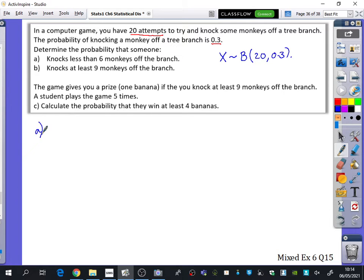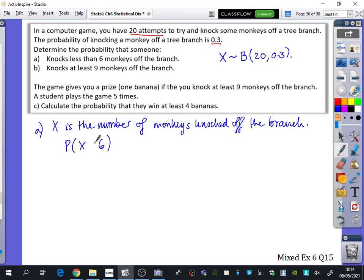So let's see if we can translate this statement. If X is the number of monkeys knocked off the branch, then we should be able to translate this, knocking less than 6. What symbol needs to go in between this X and 6? Just less than. Less than or equal to? No, it just says X is less than 6.